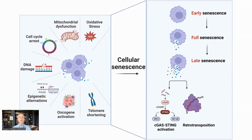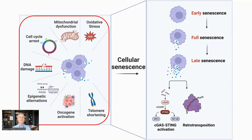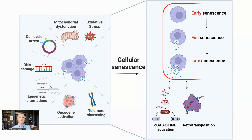Cellular senescence is when a cell enters cell cycle arrest but resists programmed cell death or apoptosis. The causes of senescent cells are varied and include mitochondrial dysfunction, oxidative stress, DNA damage, and the possibility of the cell becoming cancerous. Lower NAD levels are associated with many of these causes, such as increased DNA damage and mitochondrial dysfunction. Senescent cells will often secrete senescence-associated secretory phenotype, or SASP, a cocktail of inflammatory and pro-growth chemicals, which is one of the main contributors to the chronic inflammation of aging.